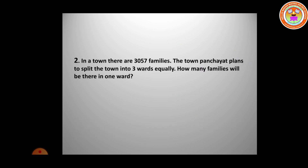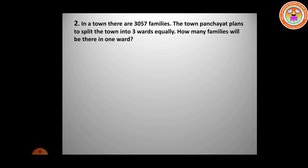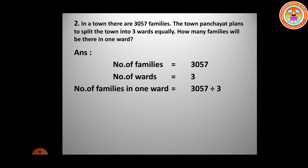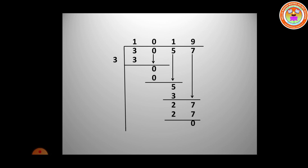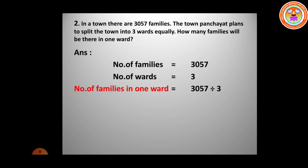Word problem: In a town, there are 3057 families. The town Panjayat plans to split the town into 3 wards equally. How many families will be in one ward? Total families = 3057, number of wards = 3. Dividing 3057 by 3, we get quotient 1019. Number of families in one ward equals 1019.